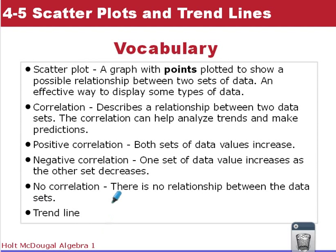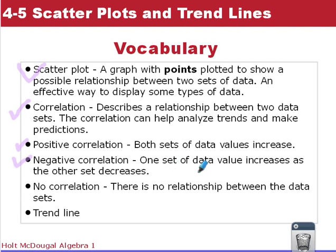Some vocabulary terms. A scatter plot is a graph with points plotted to show a possible relationship between two sets of data. Correlation describes the relationship between the two data sets. A positive correlation means both sets of data values increase. A negative correlation means one set of data values increases as the other set decreases. No correlation means there's no relationship between the data sets. And a trend line is going to help us analyze our data.